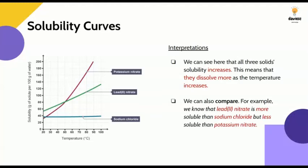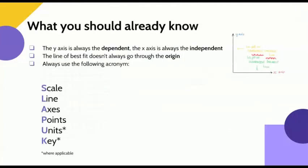But let's also remember there are a couple of basic things you need to know when you're plotting a graph in chemistry. Firstly, remembering that the y-axis has the dependent variable and the x-axis has an independent variable.